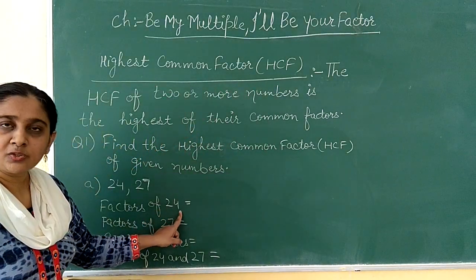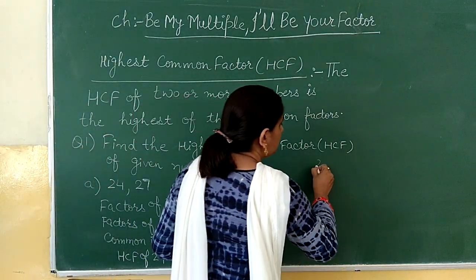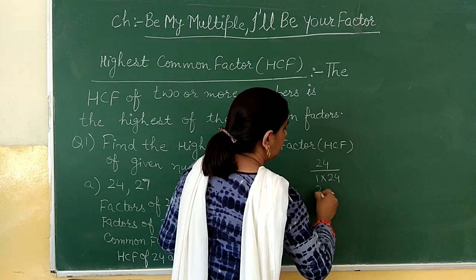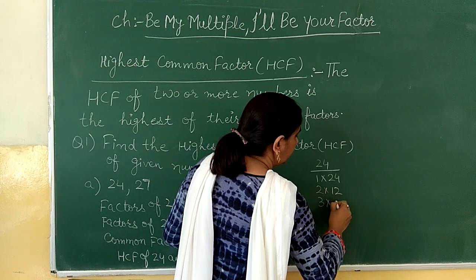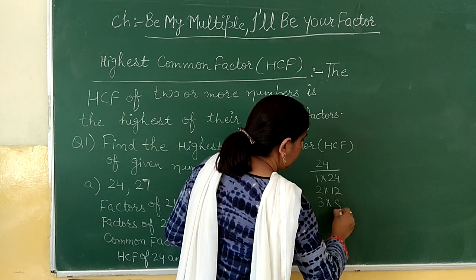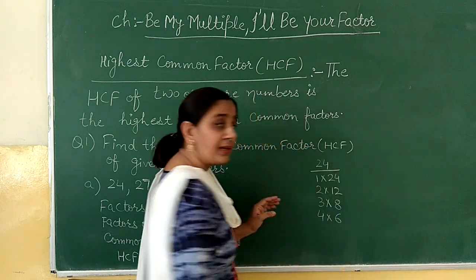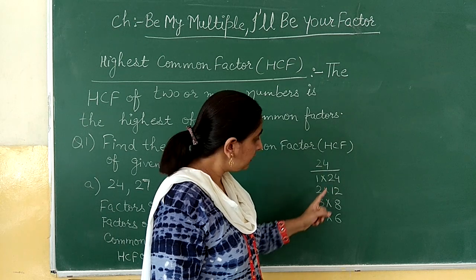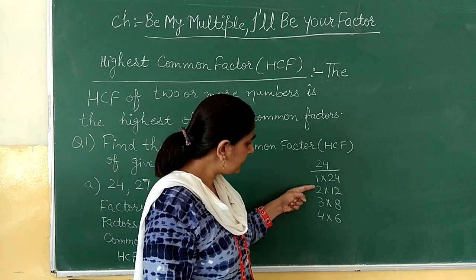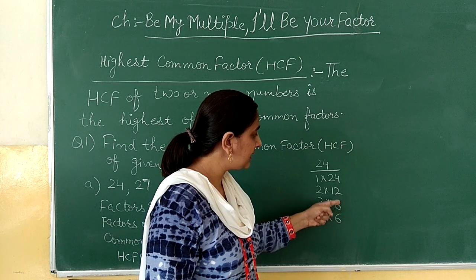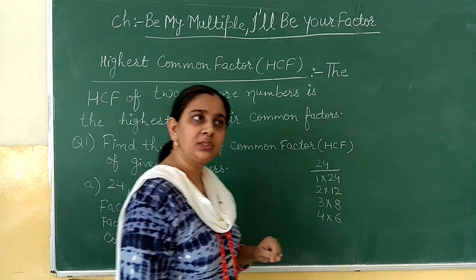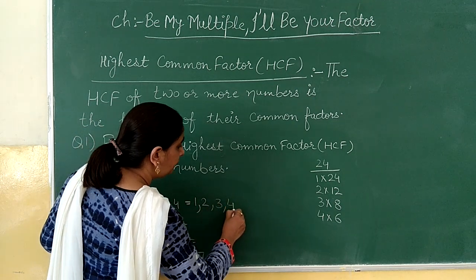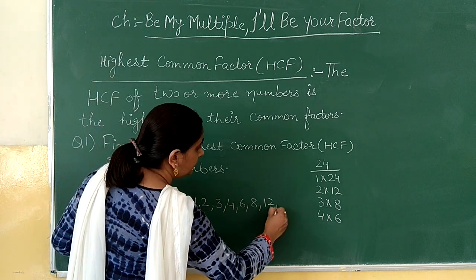For writing all the factors of 24, we will write all those pairs of numbers whose product gives you 24. From here you can say the factors of 24 are: one, two, three, four, six, eight, twelve and twenty-four.